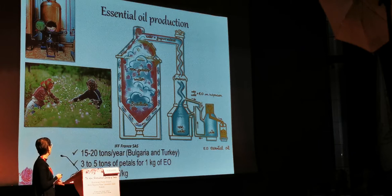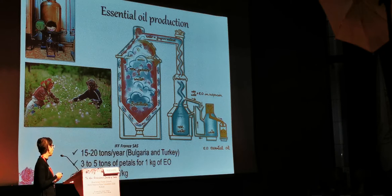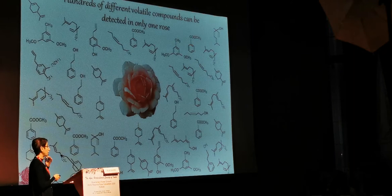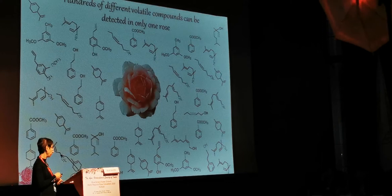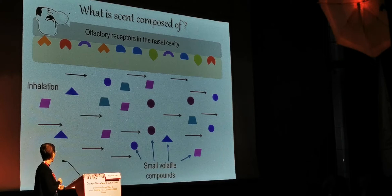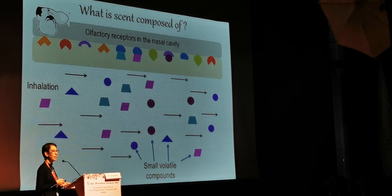The flowers are picked by hand, and the extraction process is simple: a distillator on which you put the petals and the essential oil evaporates. You can recover both the rose water, which can be used in medicine, and also the precious essential oil. There are hundreds of different volatile compounds in only one rose. They are small and volatile so they can evaporate, and we smell them in our nose, where we have olfactory receptors. The volatile compound binds to the olfactory receptor, and this binding creates the perception we have of an odour.